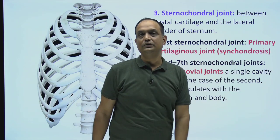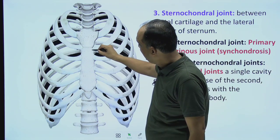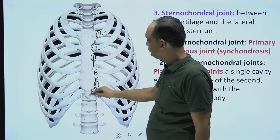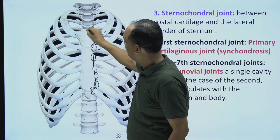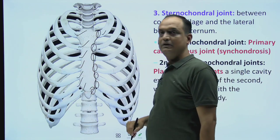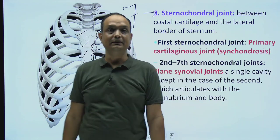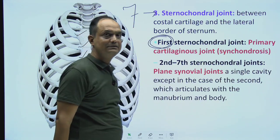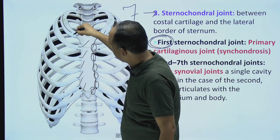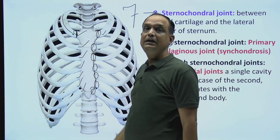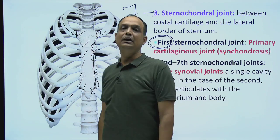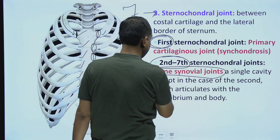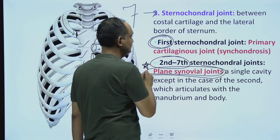Next are the sternocondral joints — between the sternum and the costal cartilages. There are seven sternocondral joints in total. The first sternocondral joint, between the costal cartilage of the first rib and the lateral aspect of the manubrium, is a primary cartilaginous joint (synchondrosis). The remaining joints — from the second to the seventh — are plain variety synovial joints.